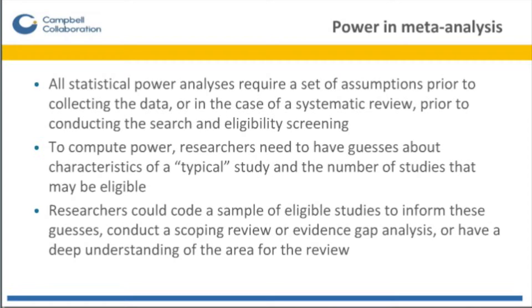Like all statistical power analyses, a power analysis in meta-analysis requires a set of assumptions. If you're doing power analysis in a primary study, there are a set of assumptions you need to have prior to collecting the data. Or in the case of a systematic review, there are a set of assumptions you need prior to conducting the search and eligibility screening. To compute power, researchers need to have guesses about, for example, the characteristics of a typical study and the number of studies that may be eligible.